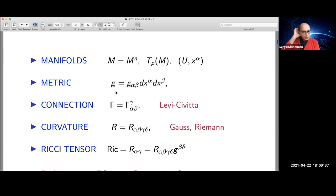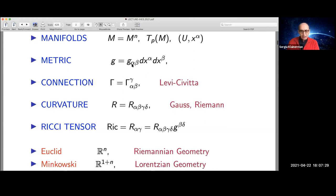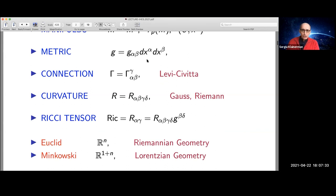Once I have the metric, I can talk about the Levi-Civita connection, which is really just an expression involving derivatives of the metric G relative to the coordinates. This formulation allows you to pass from one coordinate to another — the coefficients correspond to a particular coordinate system. The connection represents the derivative of the metric relative to the coordinates. It is not a tensorial quantity and doesn't transform well between coordinate systems.